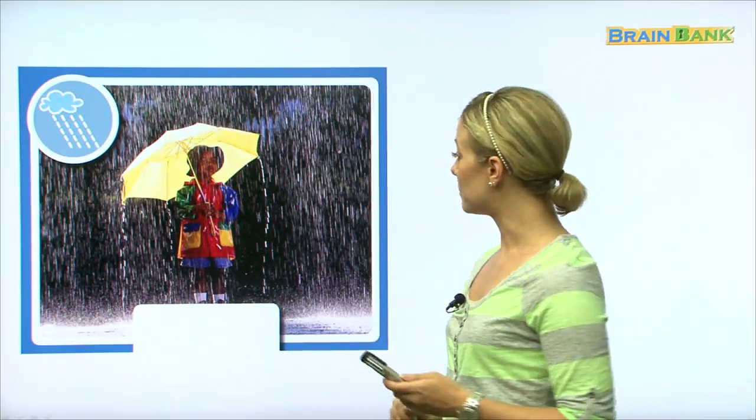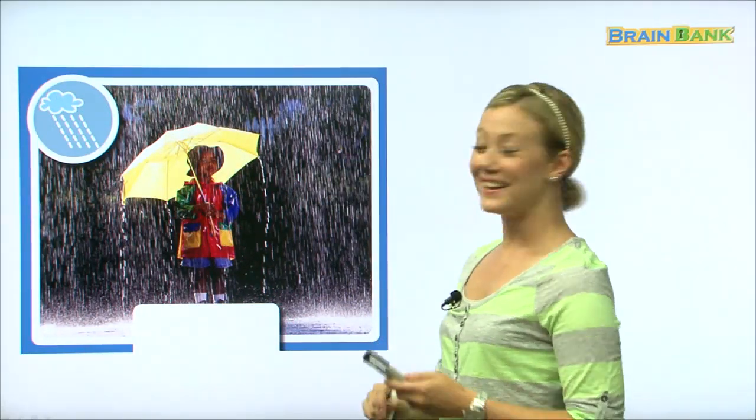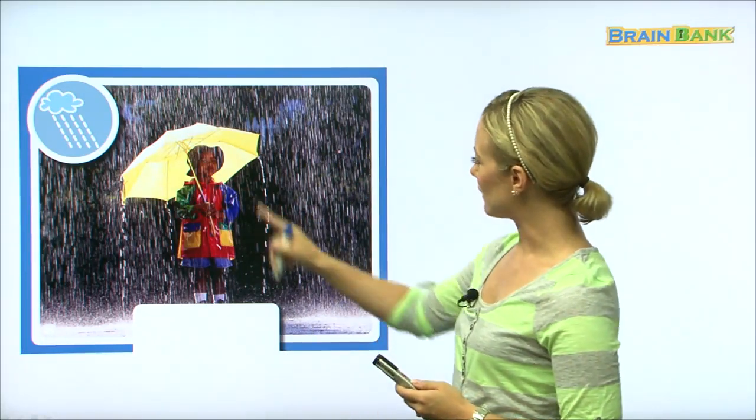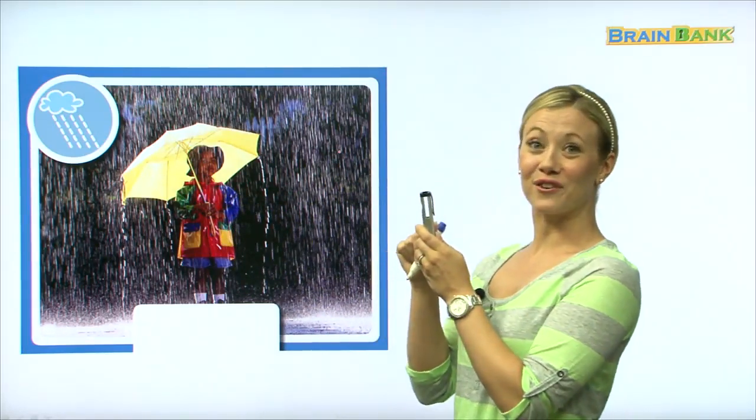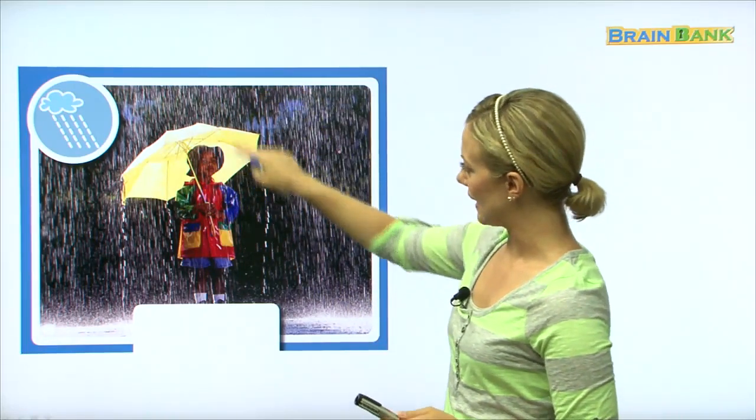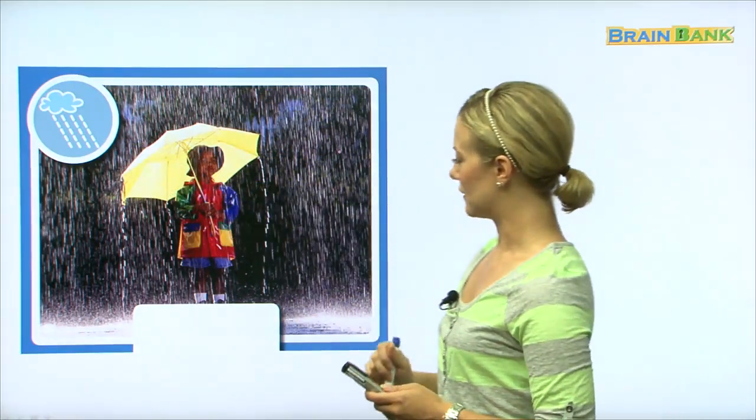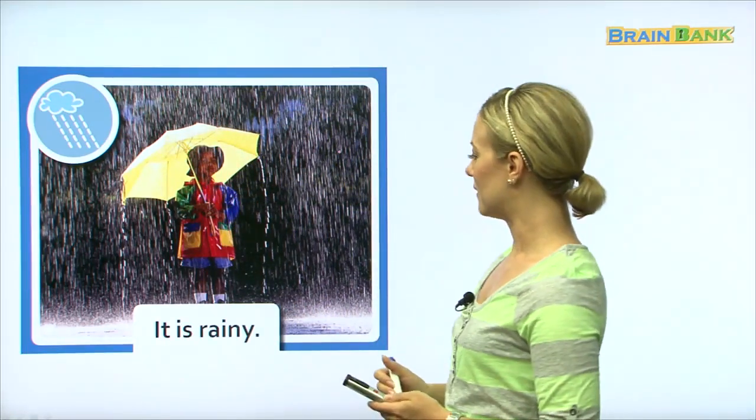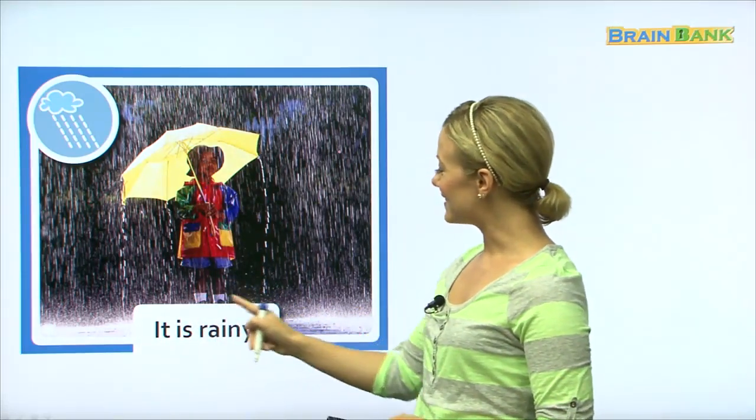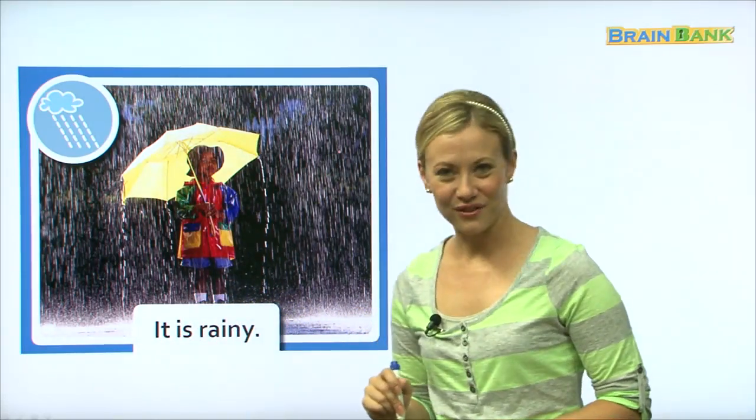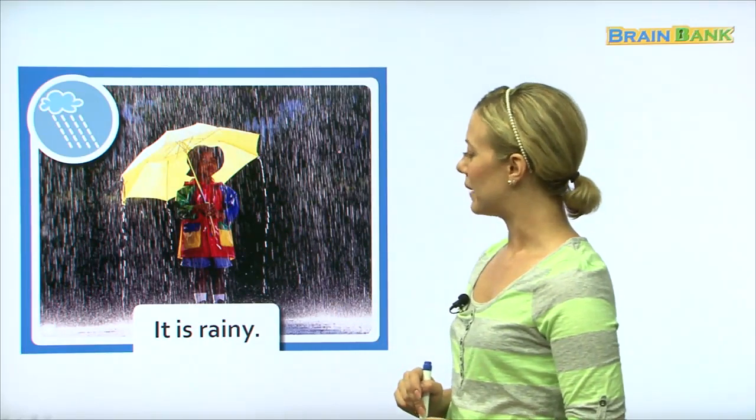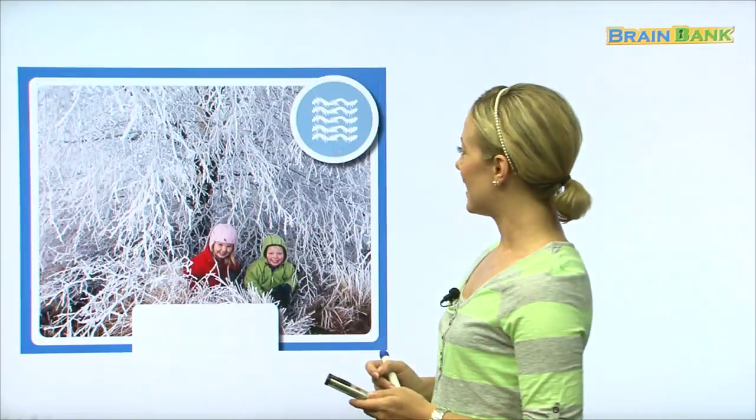Okay, so now we have some other weather. What is happening here? What is the weather like in this picture? We have a little boy, and he's holding, remember the cover of the book? He's holding an umbrella. And what is coming from the sky? What is that picture? Water! Yes, rain! Rain! It is rainy! Can you say it with me? It is rainy. Very good!